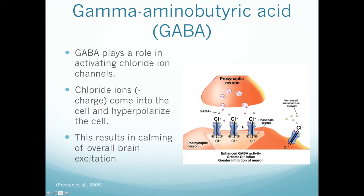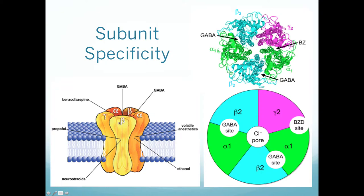GABA has an overall inhibitory, calming effect on general brain activity. GABA-A receptors are tetrameric with five subunits forming an ion pore. These globular proteins change conformation quickly, which is useful in pharmacology: movement exposes binding sites, and then shape changes cause substances to dissociate. They bind and unbind constantly — it's a continual interaction.